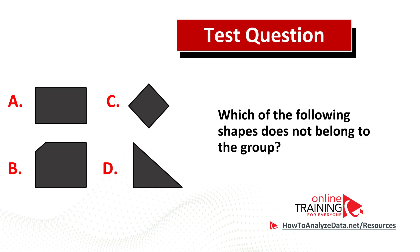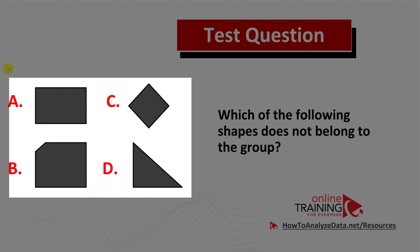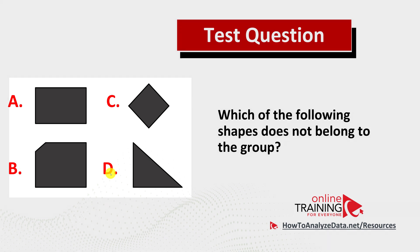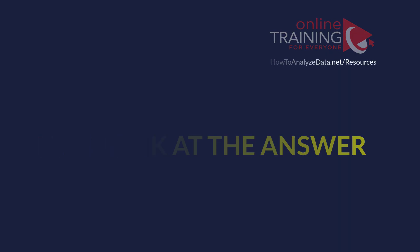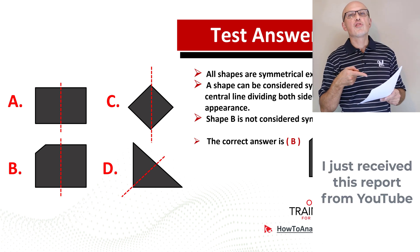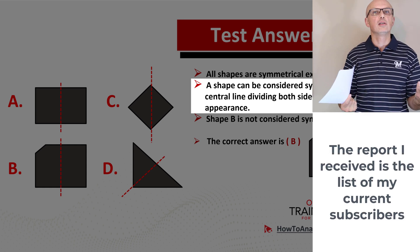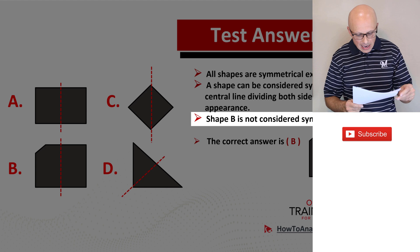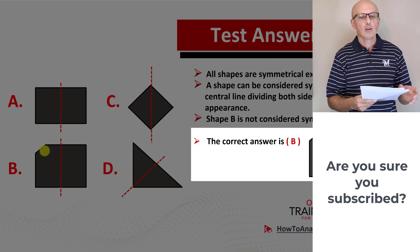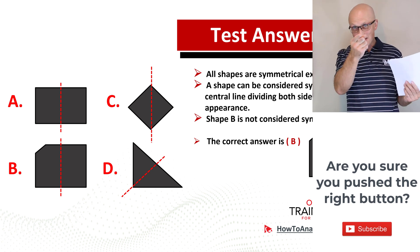Let's look at an interesting question from the real test. Which of the following shapes does not belong to the group? You have four different shapes, choices A, B, C, and D. You need to look for similarities — in this case, the similarity is being symmetrical. A shape can be considered symmetrical if it has a central line dividing both sides to show the same appearance. Shape B is not symmetrical, so the correct choice here is choice B. Hopefully you've nailed this question, but in case you need more practice problems, please check out my e-book in the description section of this video.